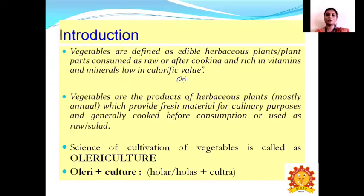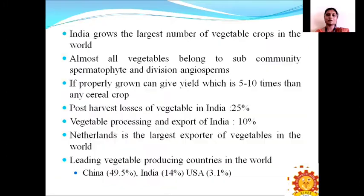Olericulture is derived from the word 'olera' or 'oles', and 'culture' is derived from the word 'khaltra', which means cultivation. Cultivation of vegetables is called olericulture. India grows the largest number of vegetable crops in the world. Almost all vegetable crops belong to the sub-division spermatophyta. If we grow vegetable crops properly, they can yield about 5 to 10 times more than any cereal crop.